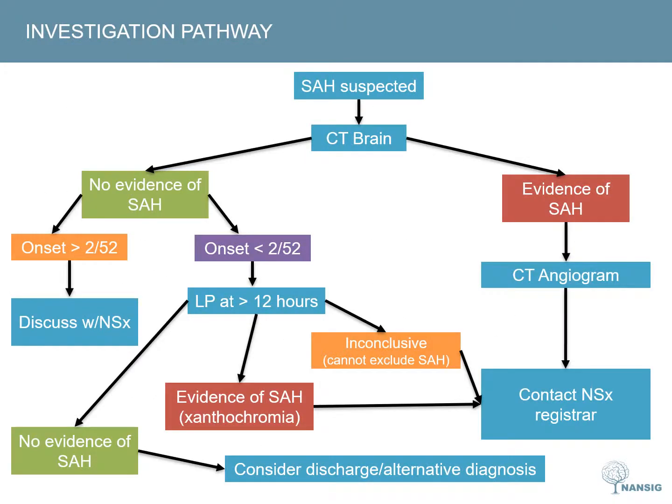Given the importance of making a diagnosis of subarachnoid haemorrhage, many units have developed pathways to aid doctors in making the correct diagnosis. If the clinical history is suggestive of a subarachnoid haemorrhage, a CT brain should be performed as soon as possible. If there is evidence of subarachnoid haemorrhage on this scan, a CT angiogram should be performed and the patient referred to neurosurgery. If the CT is negative, a lumbar puncture should be considered.